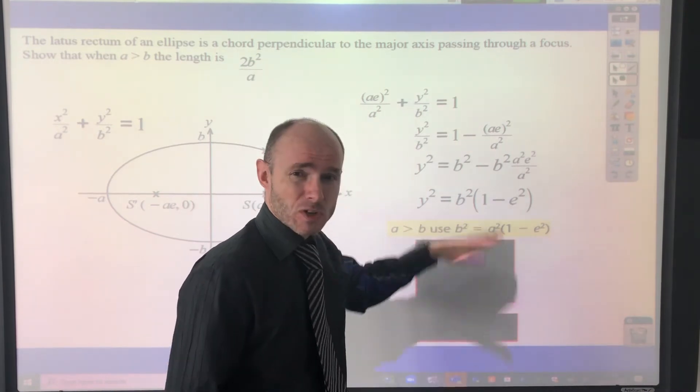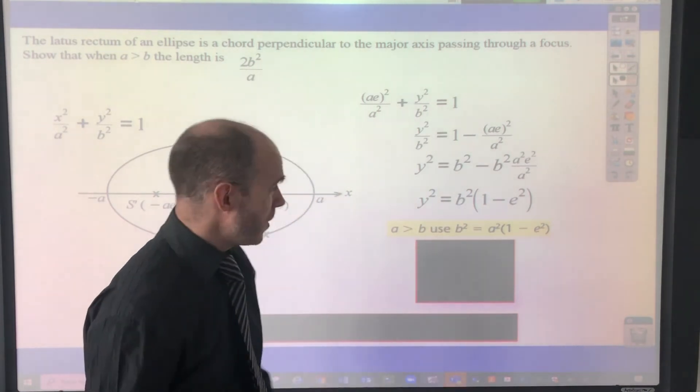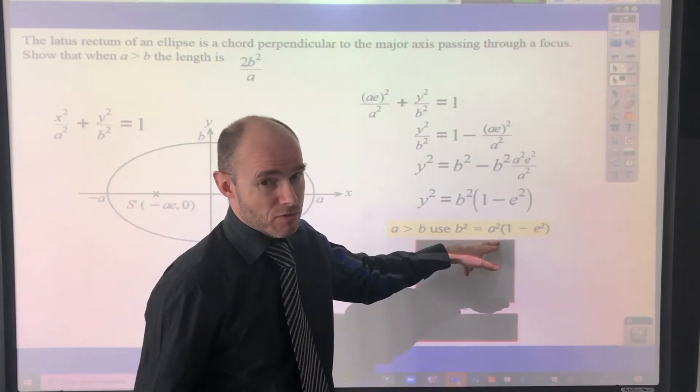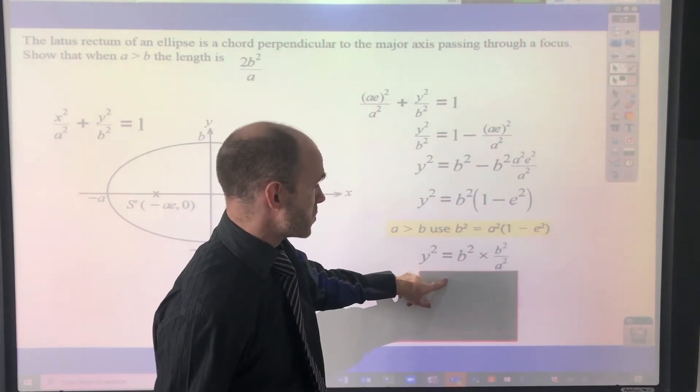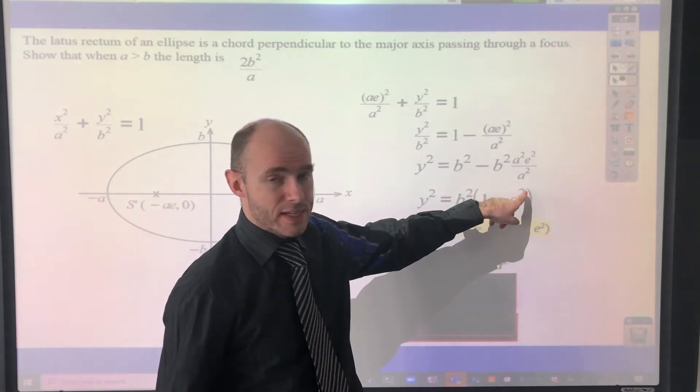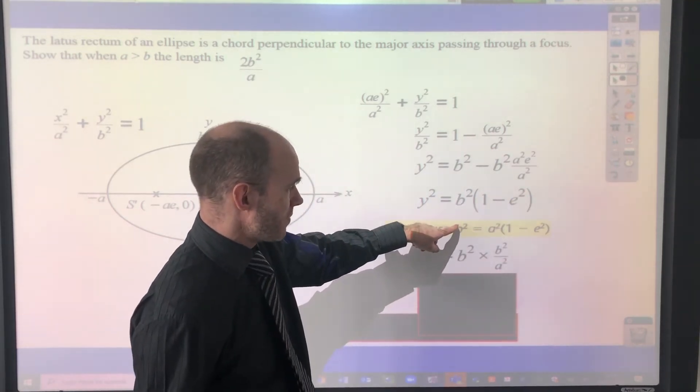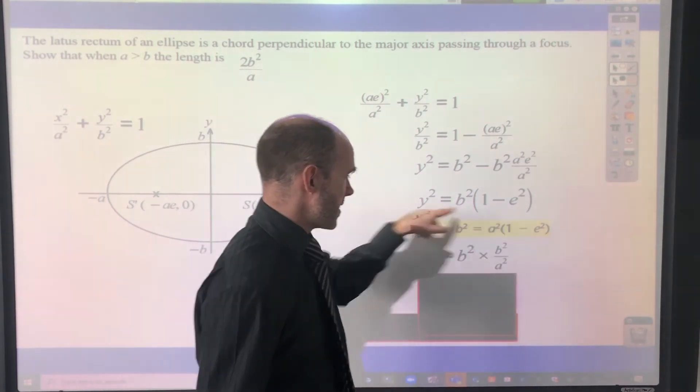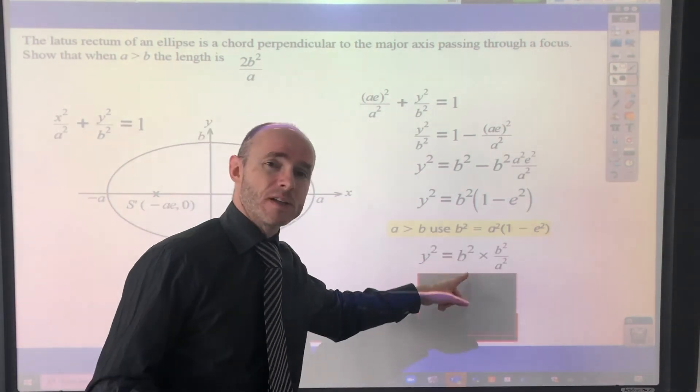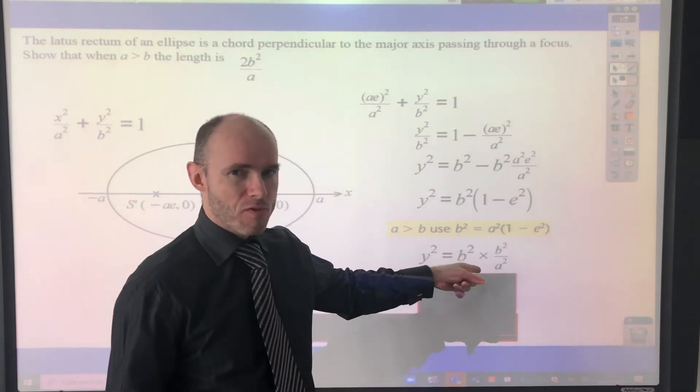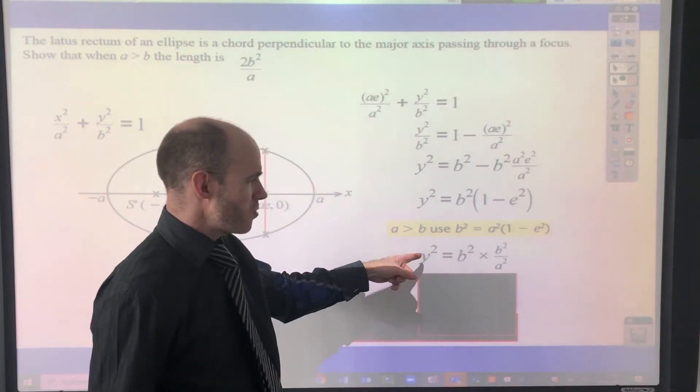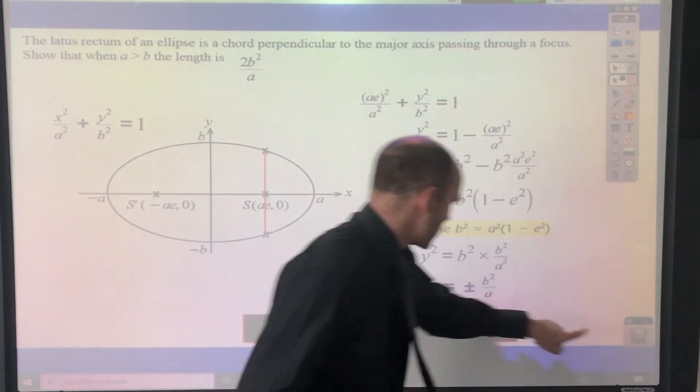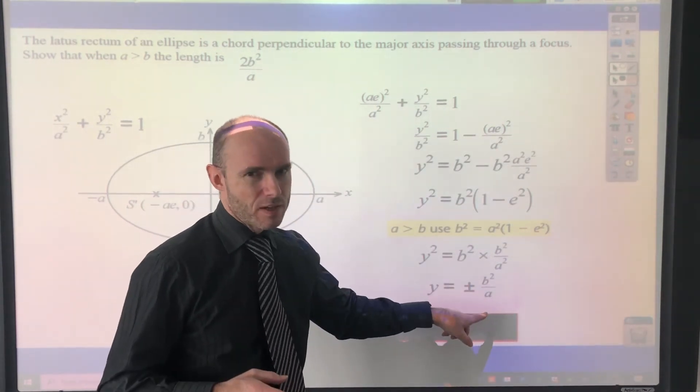Okay, well, from this, the one minus e squared, we can write that as b squared over a squared, can't we? So that's pretty much what I've done. So I've just rewritten one minus e squared as b squared over a squared by making one minus e squared the subject in this line there. And then you can see that will simplify to b to the power of four over a squared. And then when you square root both sides, don't forget to take the positive and negative square roots. You end up with b squared over a. So what does that mean?